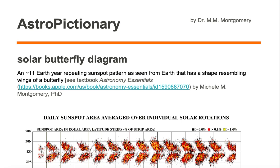A solar butterfly diagram is an approximately 11 Earth-year repeating sunspot pattern, as seen from Earth, that has a shape resembling wings of a butterfly.